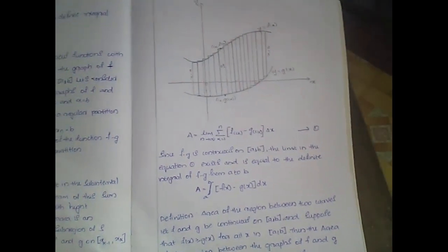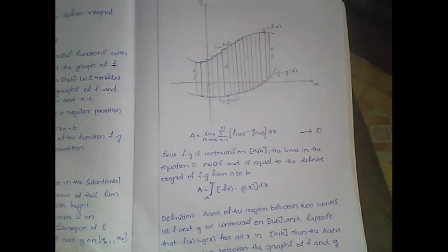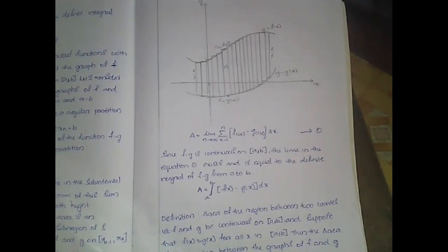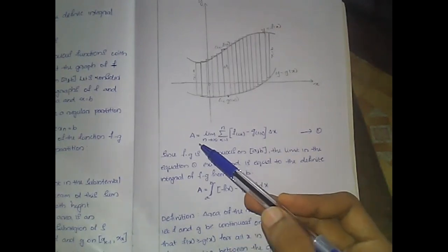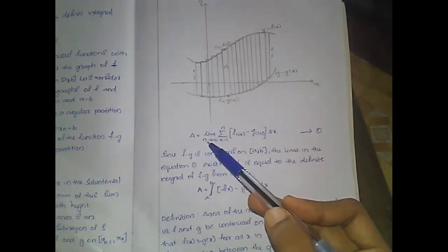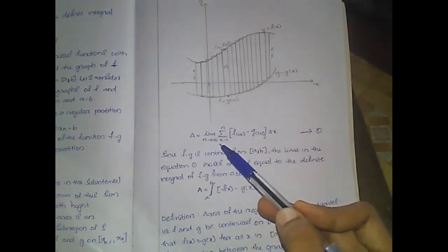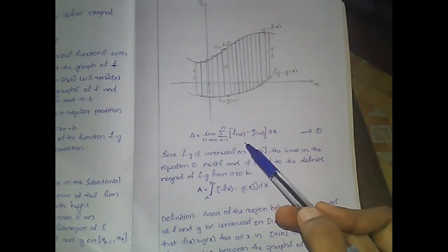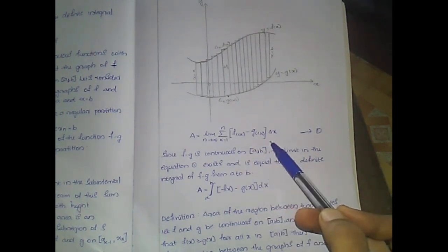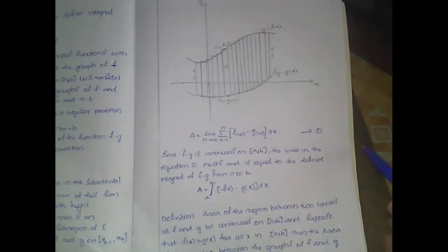If n gets larger and larger, the sum of these rectangles will approximately give the area of this region. Therefore, the area is given by A equal to the limit as n tends to infinity of the summation from k=1 to n of [f(ck) minus g(ck)] times delta x.